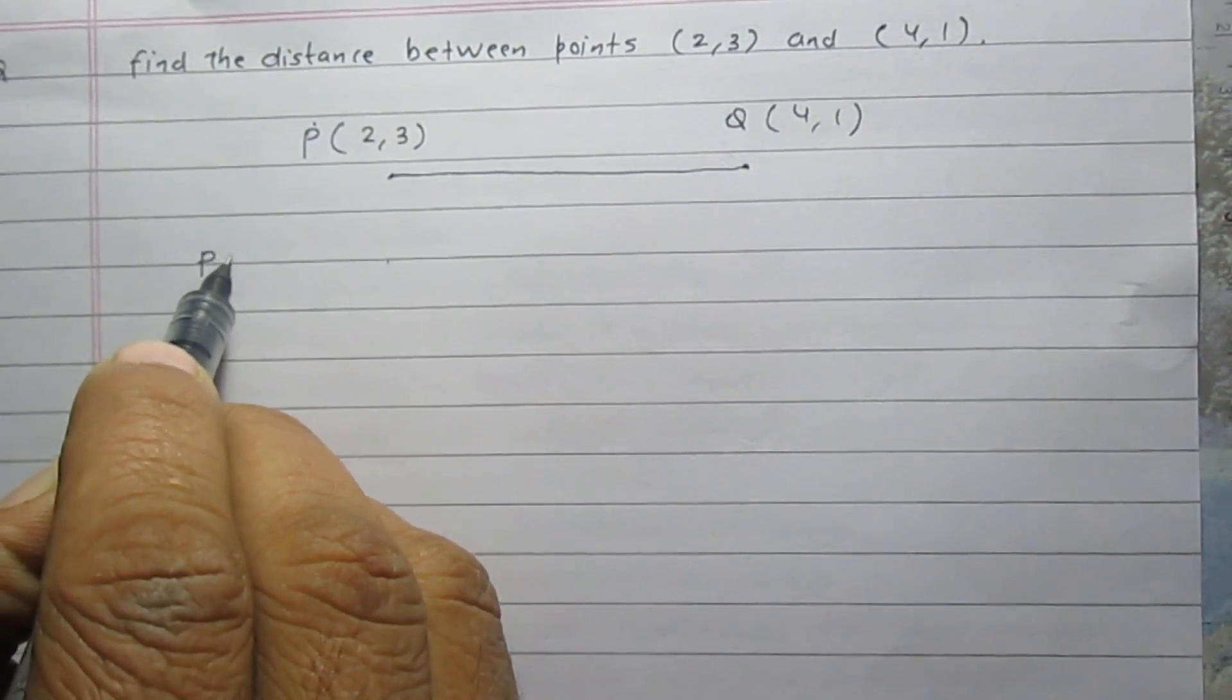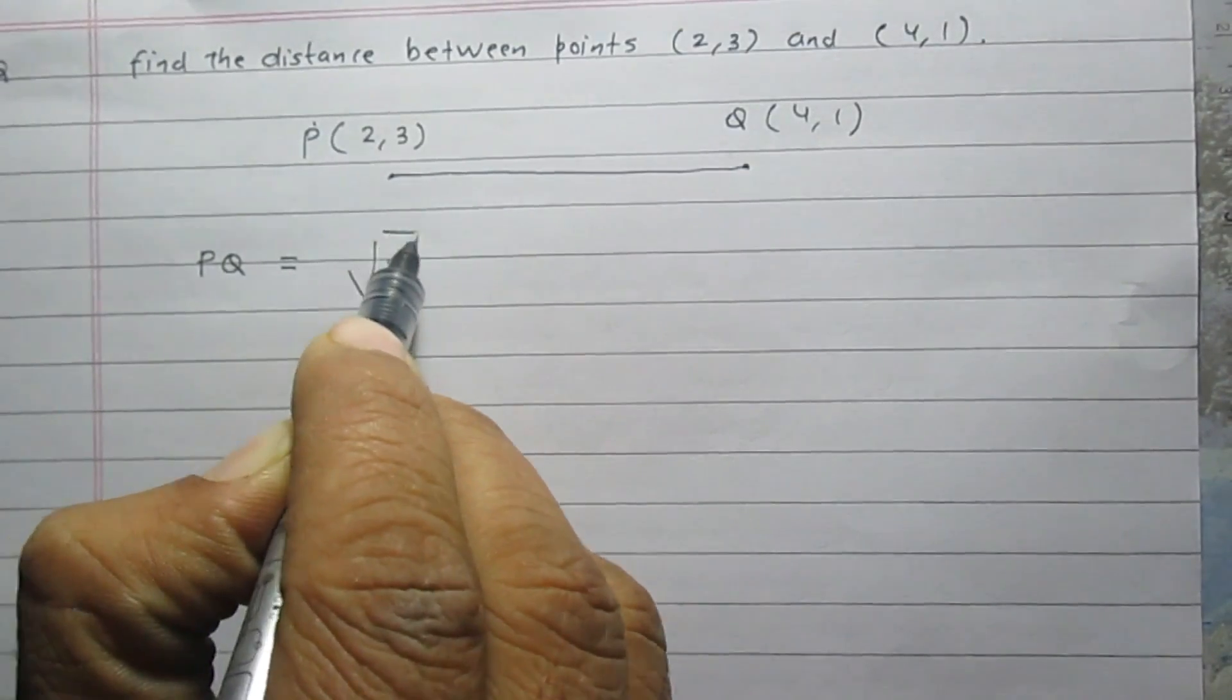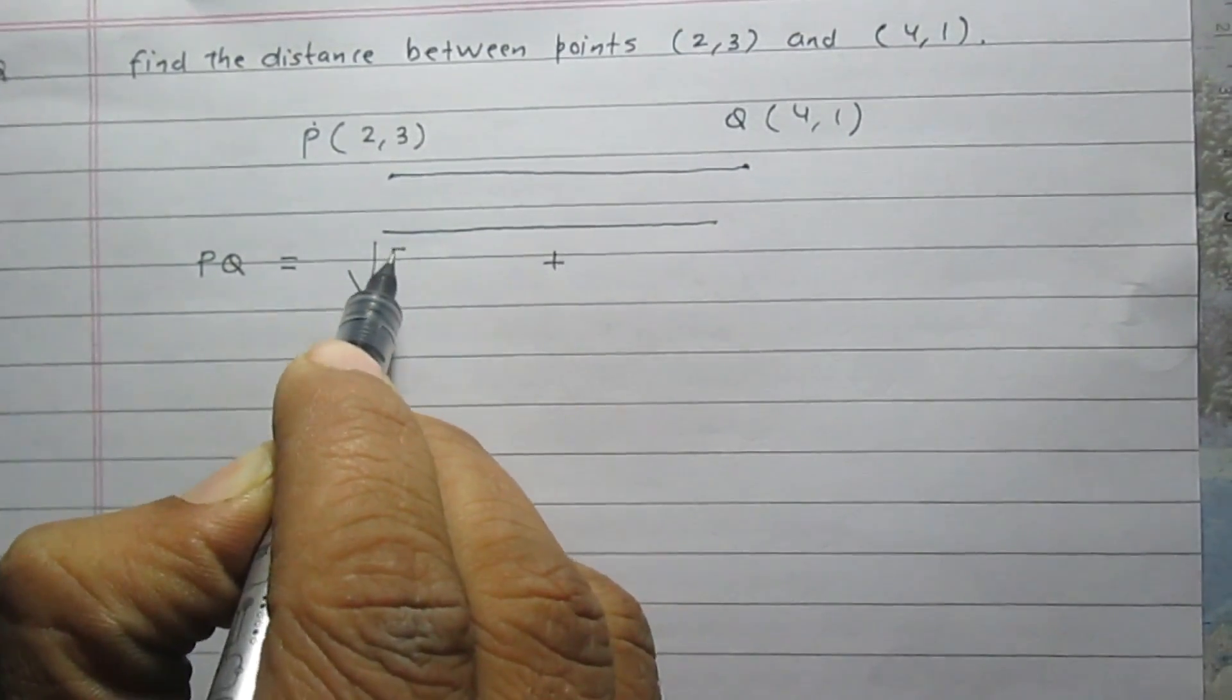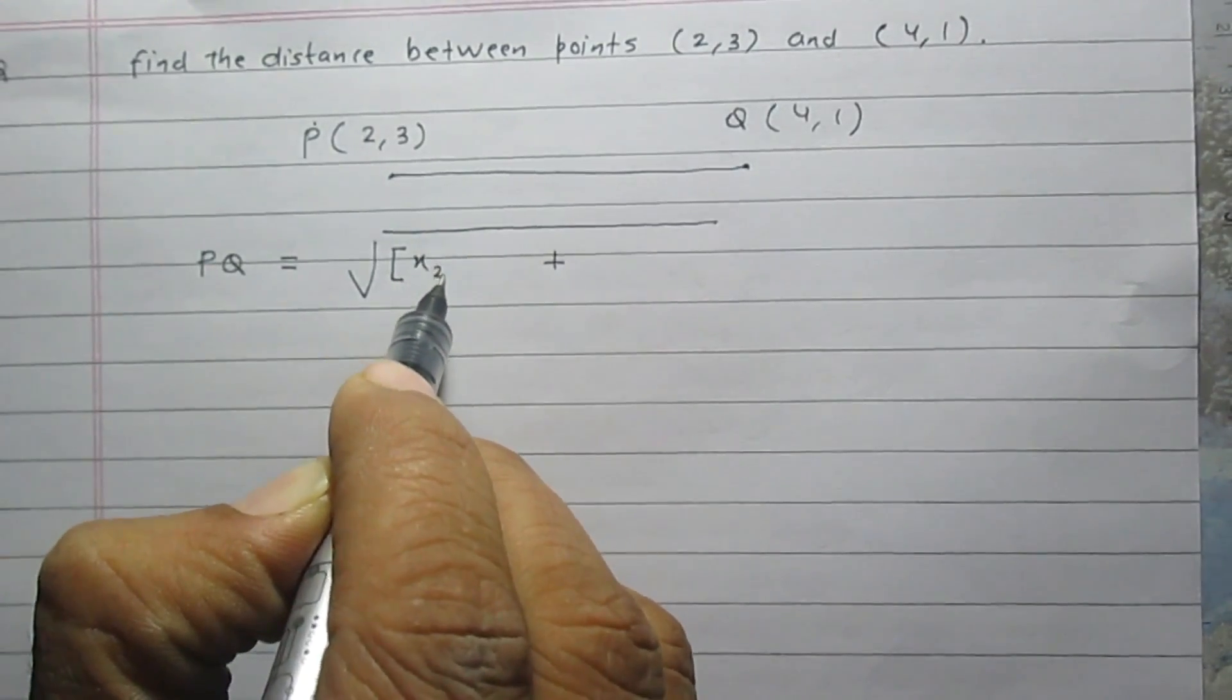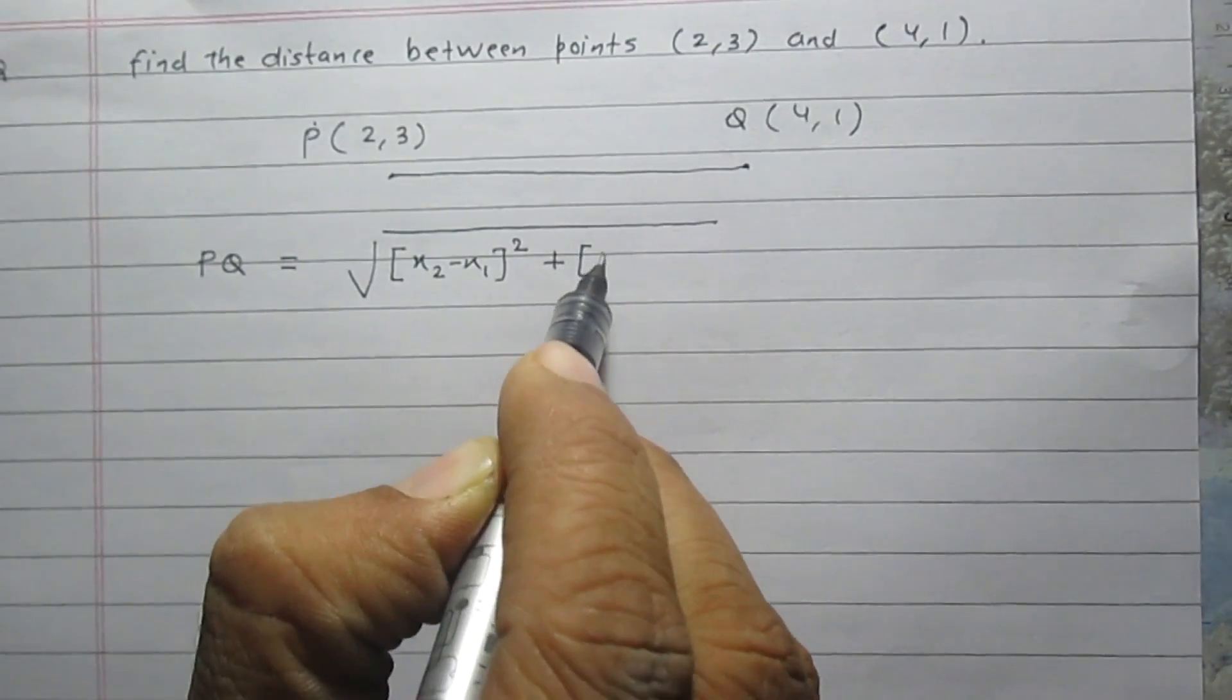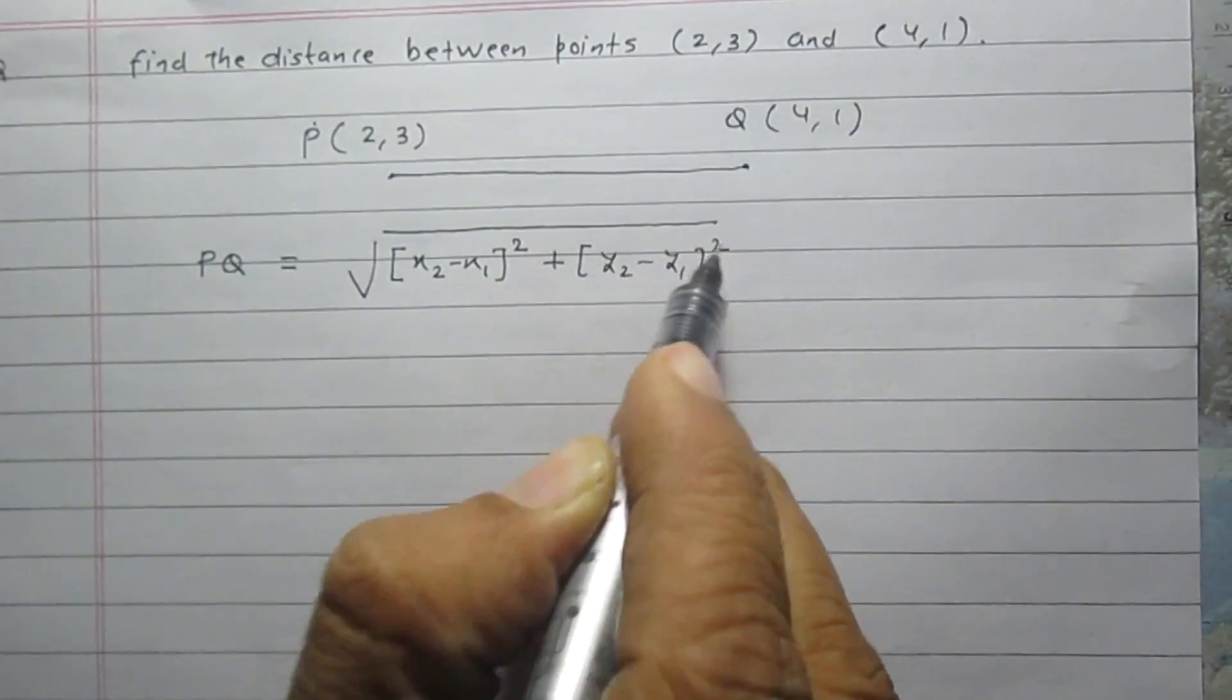According to the distance formula, the distance PQ is equal to the square root of the sum of (x2 minus x1) squared and (y2 minus y1) squared.